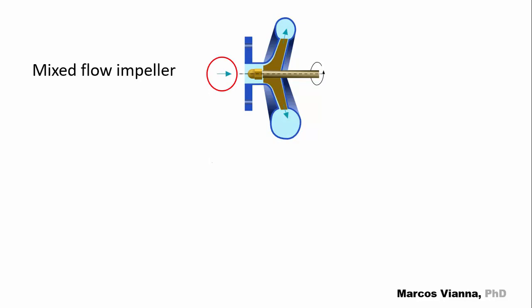It's a mixed flow impeller. The water keeps flowing following the axis direction, but flows out at an angle from the axis. Like this. The characteristic curve changes a little. Now the flow gets greater and the head gets smaller.